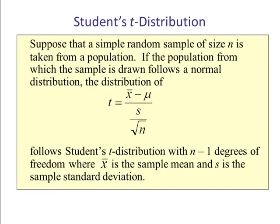Suppose that a simple random sample of size n is taken from a population. If the population from which the sample is drawn follows a normal distribution, the distribution of t equals x bar minus mu divided by s divided by square root of n follows a student t distribution with n minus 1 degrees of freedom, where x bar is the sample mean and s is the sample standard deviation.